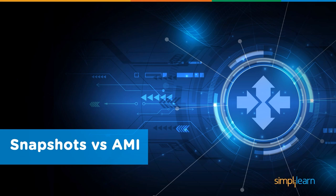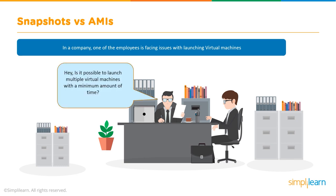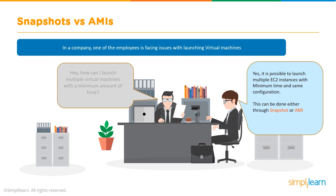When using autoscaling, the terms snapshot and AMI come up. In a company scenario, an employee asked how to launch multiple virtual machines quickly with the same configuration. A colleague explained that multiple EC2 instances can be launched quickly using either a snapshot or an AMI on AWS.